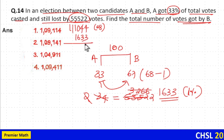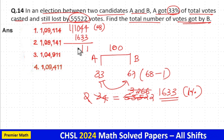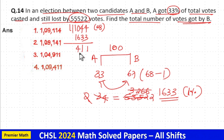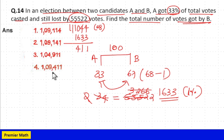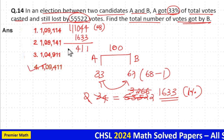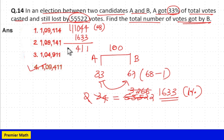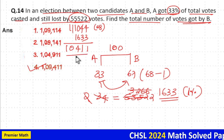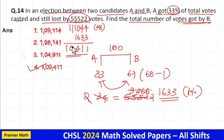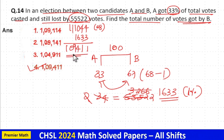Subtracting: 4 minus 3 is 1, 4 minus 3 is 1, 10 minus 6 is 4, and bringing down 11 at the end gives 109,411. So the total votes scored by B is equal to 1,09,411. Option 4 is your answer.